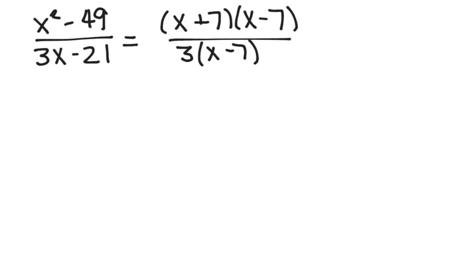We are going to look for common factors in numerator and denominator. In this case, that's the x minus 7. And that leaves me with x plus 7 on top divided by 3.